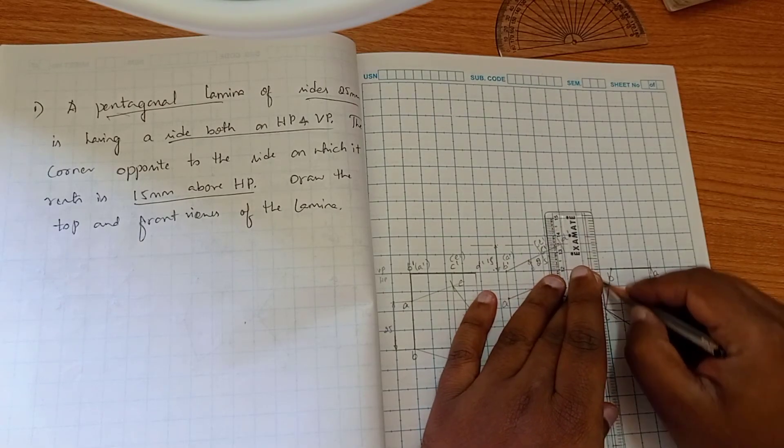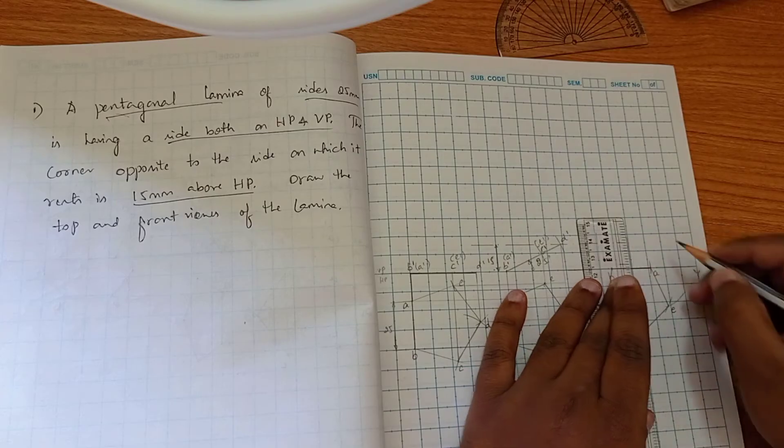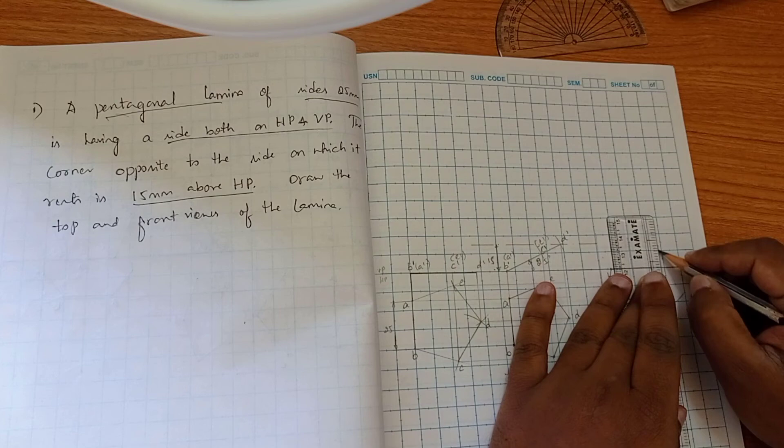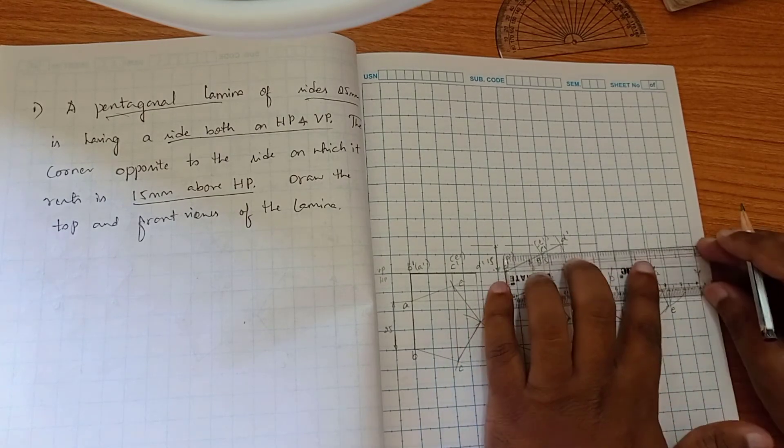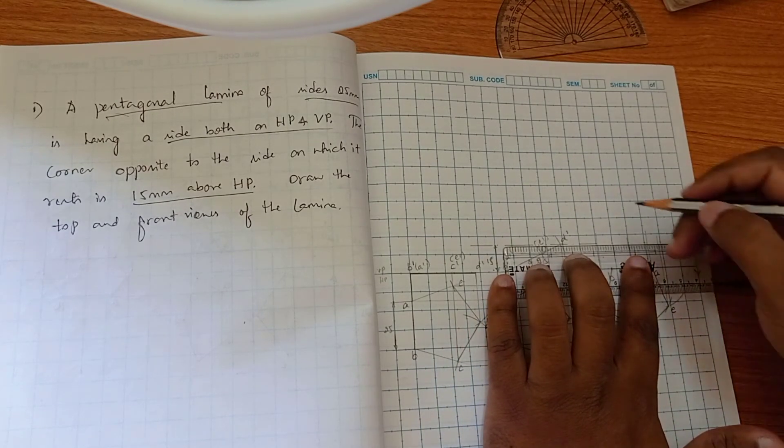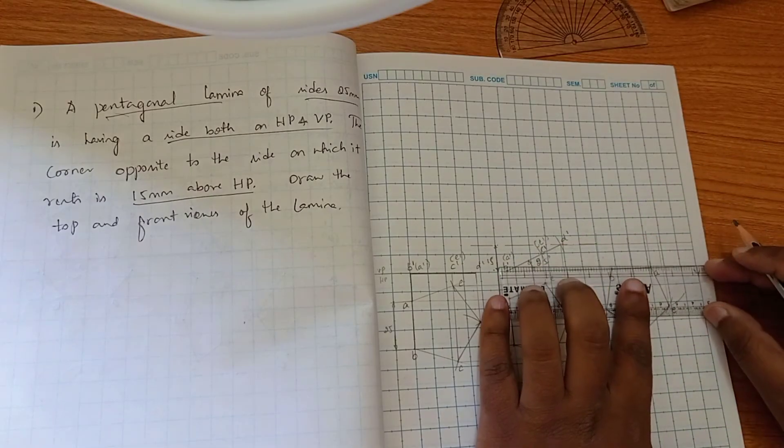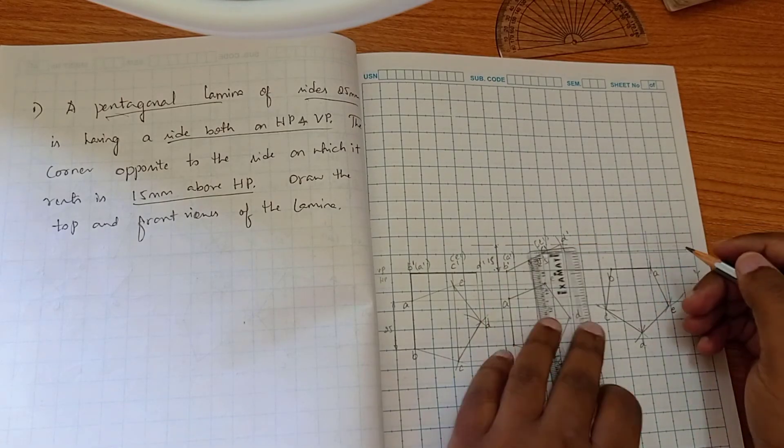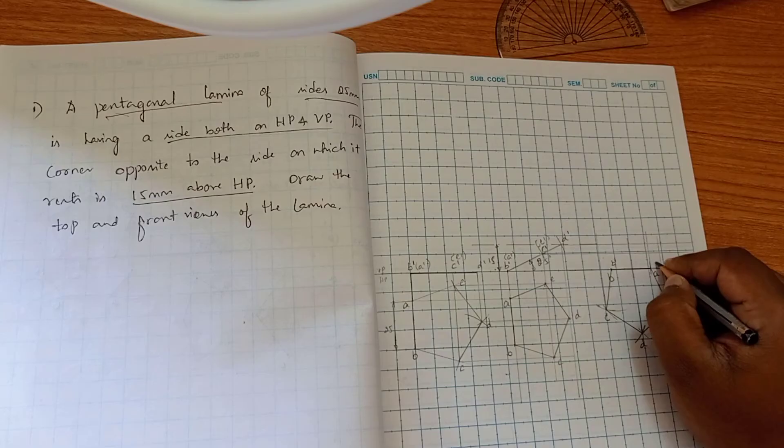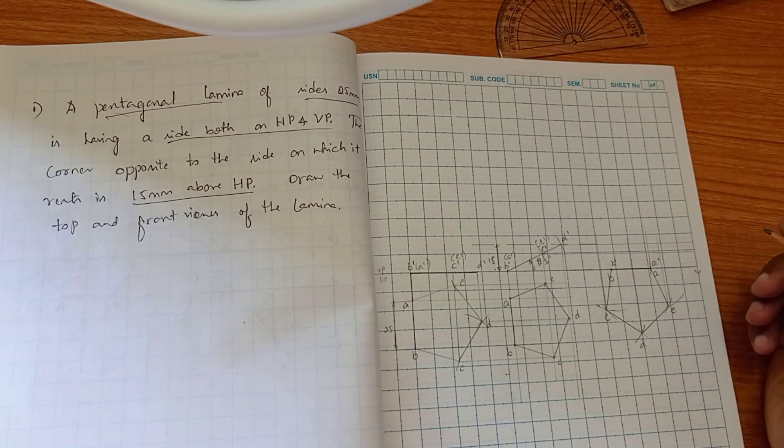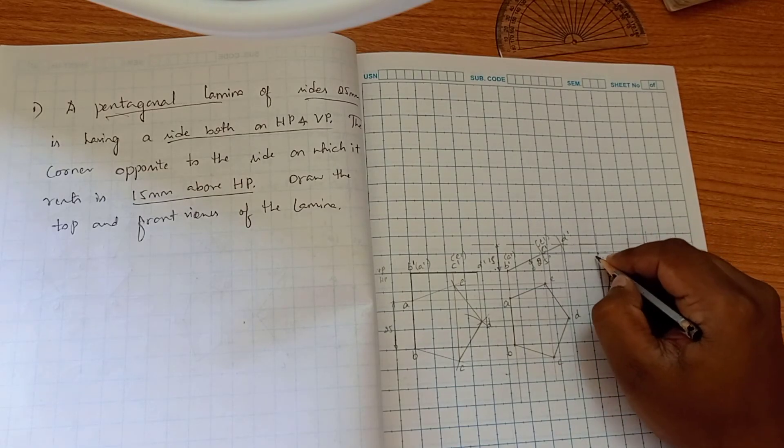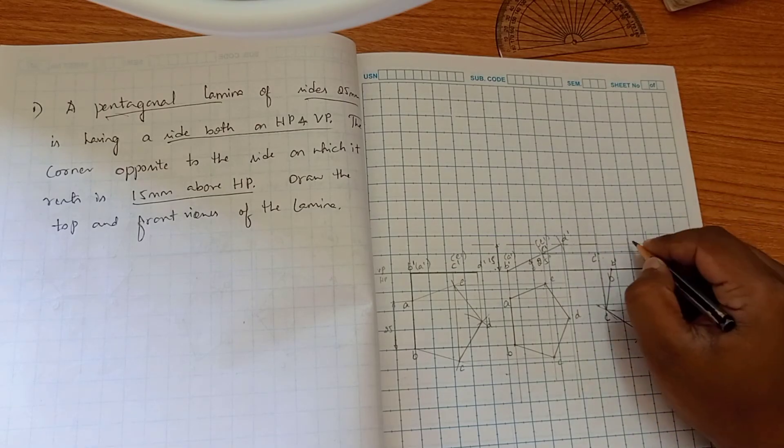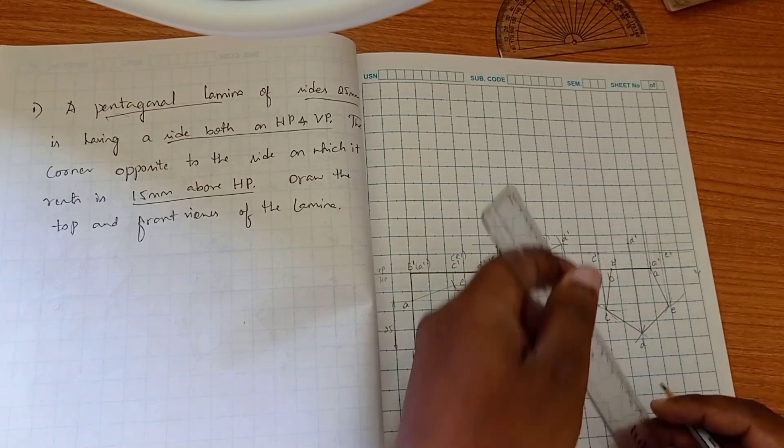Now projecting upward, we can complete the rest of the diagram. So we have B dash and E dash here, and this is C dash. This is E dash and this point is D dash.